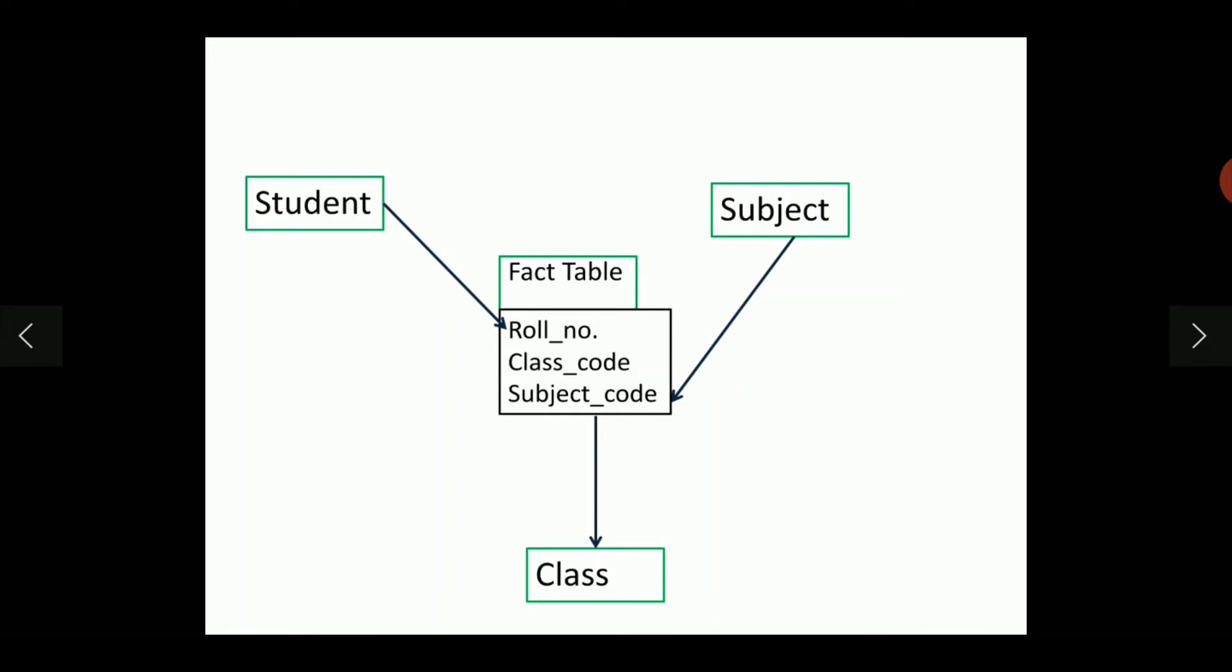The primary key of student is roll number. Primary key of subject is subject code and the primary key of class is class code. The fact table contains all of these keys as the foreign keys and there is no other field except these keys in the fact table. This fact table is without facts.